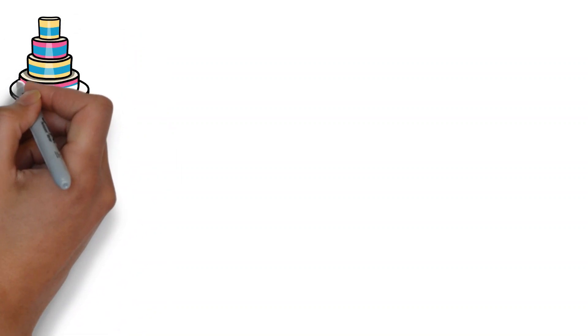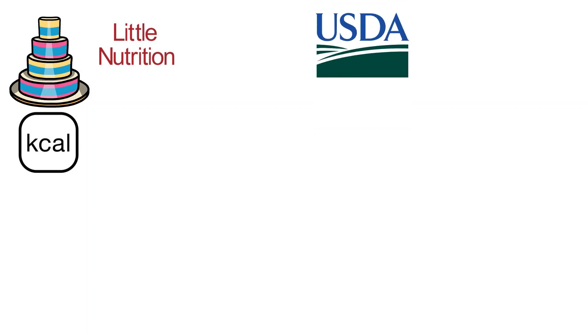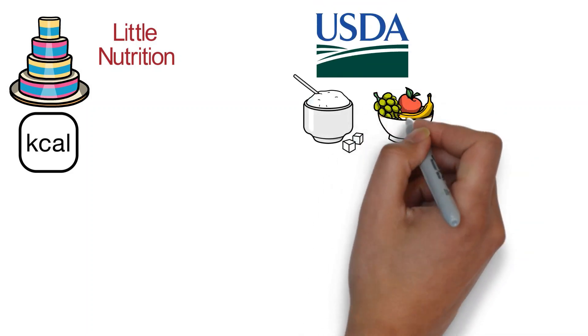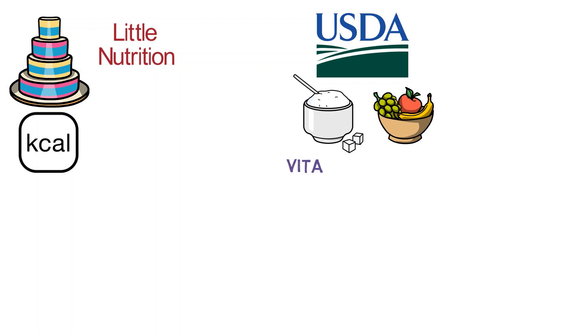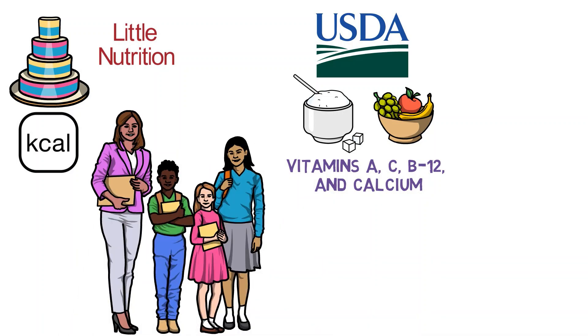Foods with a lot of added sugars contribute extra calories to your diet, but provide little nutritional value. According to USDA data, people who consume the most sugar have the lowest intakes of essential nutrients, especially vitamins A, C, B12, and calcium. The trade-off is especially dangerous for children and teens, who simultaneously consume the most sugar and need the most nutrients.